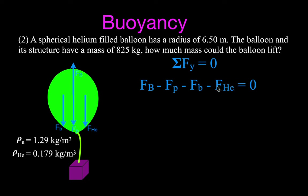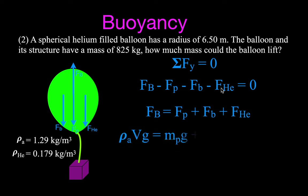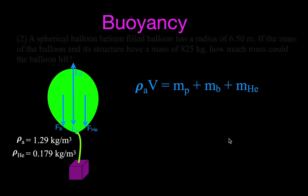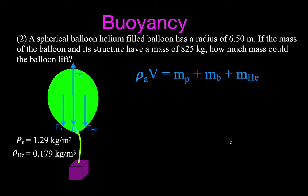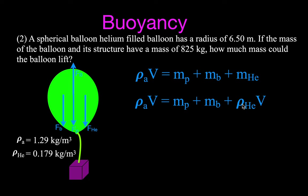The buoyant force acts up and the three weight forces act down. We solve for the minimum buoyant force needed to lift the objects and substitute in the equations we know — the buoyant force and Newton's second law expressions. We cancel g and get the same base equation. This time we want to solve for the mass of the payload. We again don't know the mass of the helium, so we substitute: mass of helium equals density of helium times volume.